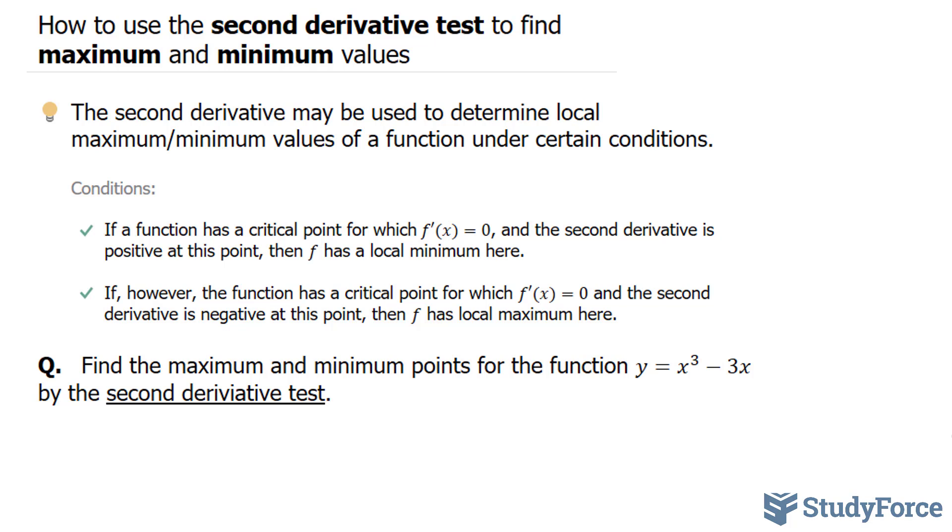Now in that video I just mentioned, we used the exact same function. And we came with the conclusion that there was a local maximum, a max at x is equal to negative 1, and a minimum at x is equal to positive 1. So if we do this correctly, we should come up with the same conclusion.